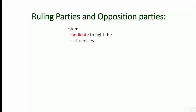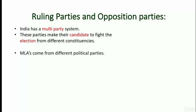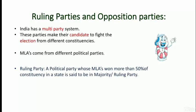Chhattisgarh state is divided into 90 constituencies. A political party whose MLAs win more than 50 percent of the constituencies is said to be in majority. The political party which is in majority is also known as the ruling party, or we can say it forms the government. All other MLAs form the opposition.